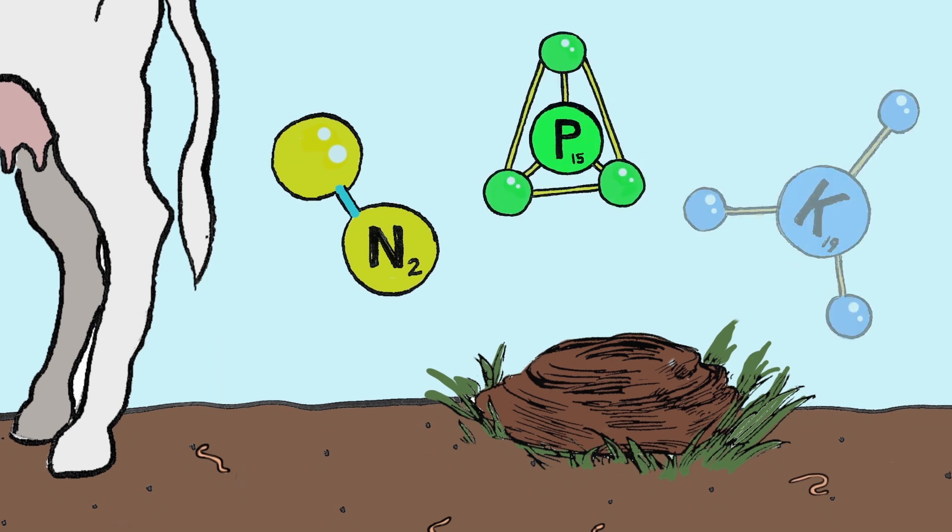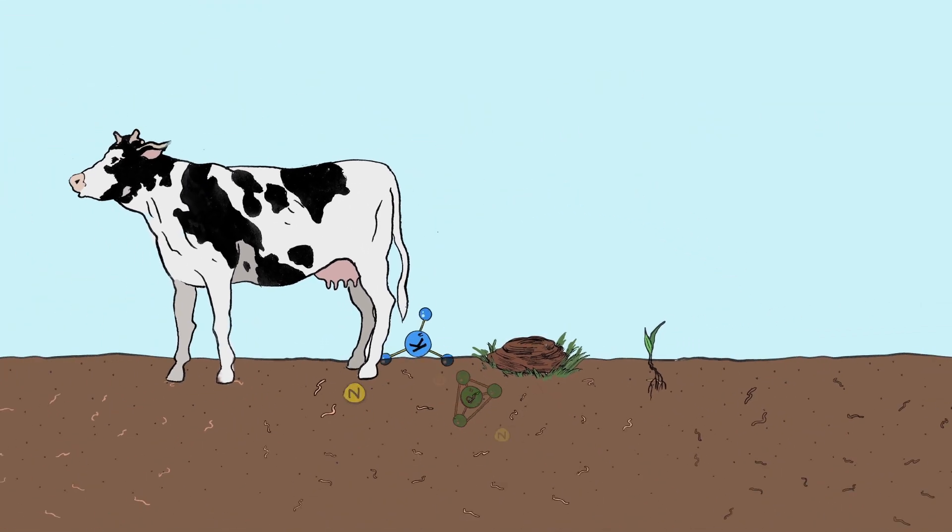Manure is rich in nitrogen, phosphorus, potassium and important micronutrients necessary for crop growth.